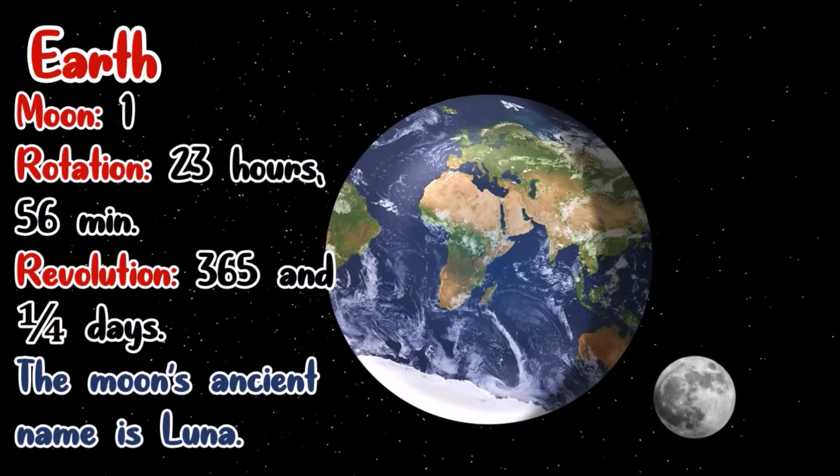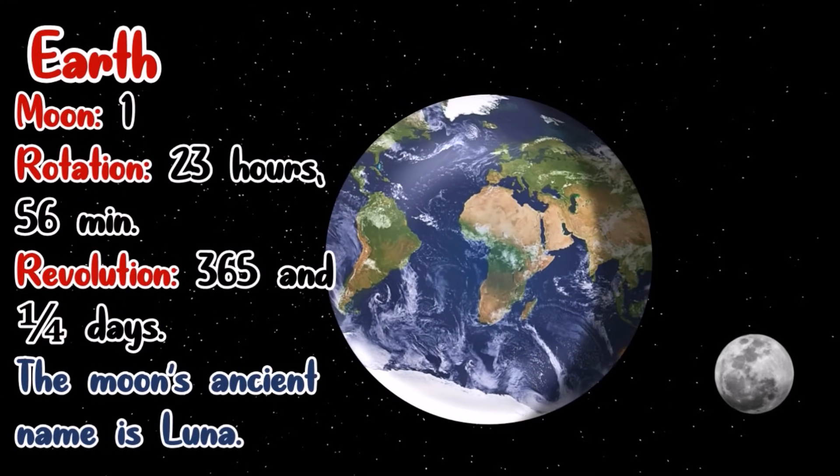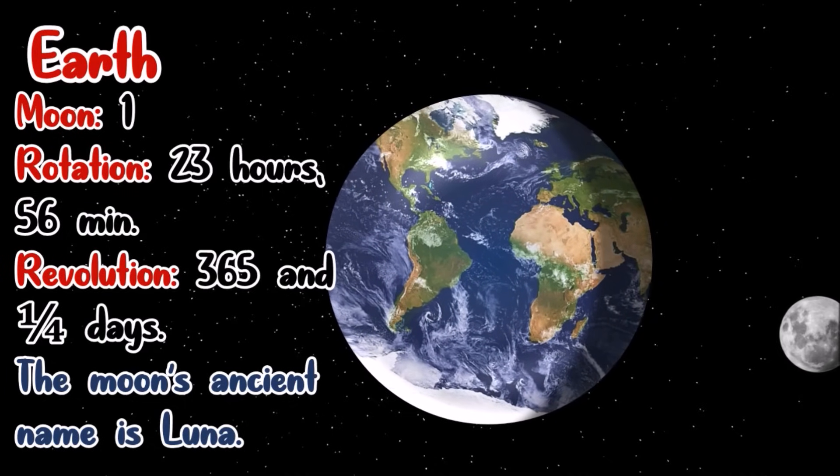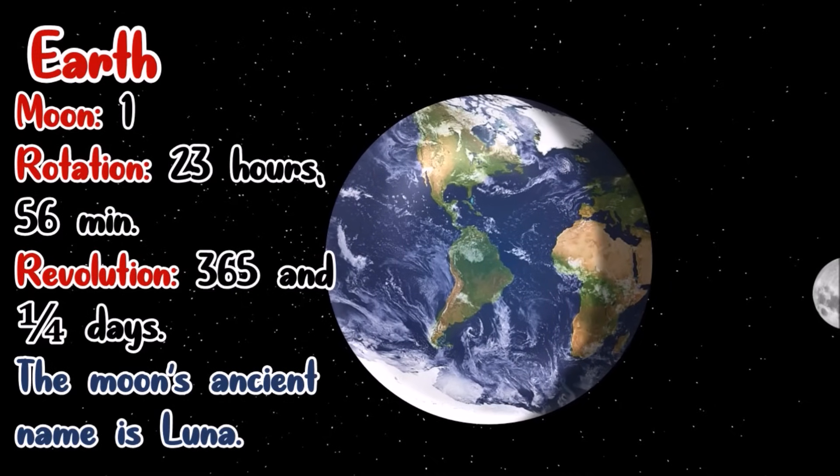Earth's atmosphere burns most of the meteors before they reach the Earth's surface. The Earth has one large moon. Earth's rotation requires 23 hours and 56 minutes. And one complete revolution of the Earth takes 365 and one-fourth days.